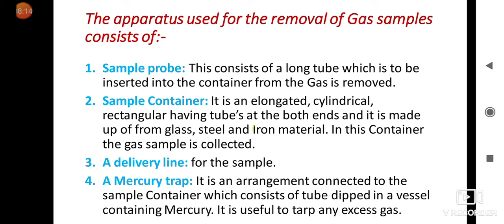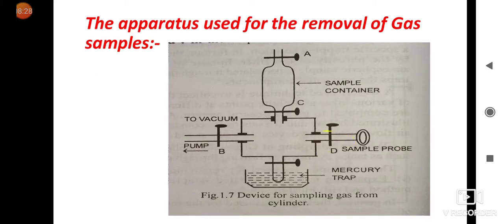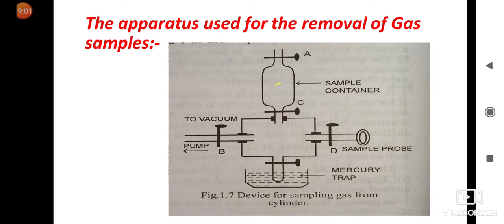The third term is the delivery line for the sample material. This is the part called the delivery line — it carries the sample from the sample probe going inside into the sample container. At that time, valves B and A are all closed, and whatever sample is coming from the delivery line through the sample probe is going into the sample container.